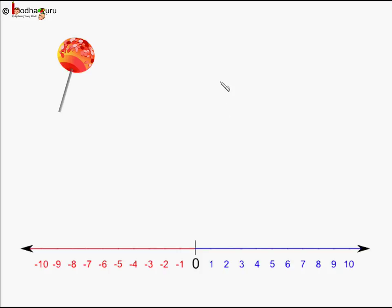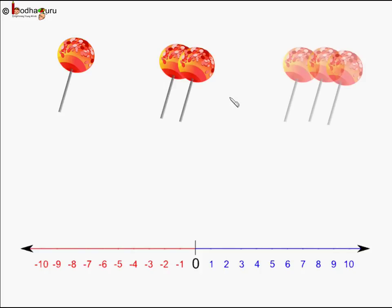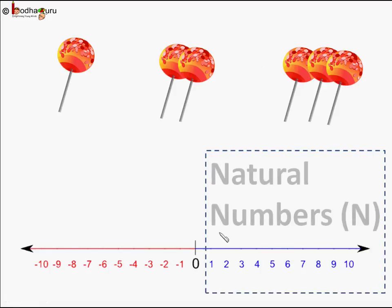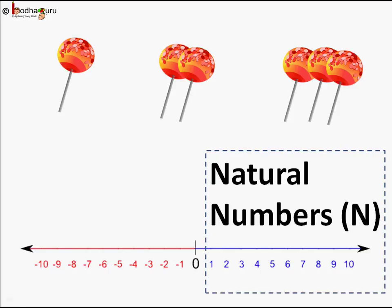The numbers which we use for counting objects — like one candy, two candies, three candies and so on — this collection of numbers 1, 2, 3, 4 and so on is called natural numbers, which we use typically in our day-to-day counting. This collection of natural numbers is denoted by N.